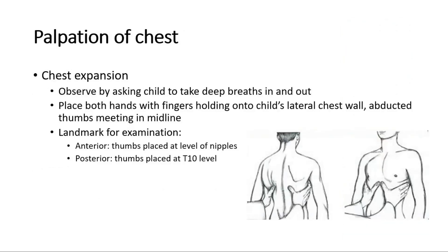Next, palpation of the chest — start with the anterior chest, then move to the back. For palpation, we can assess chest expansion, which is usually performed in children more than 5 years old. Observe the general chest expansion by asking the child to take deep breaths in and out. The examiner places both hands with fingers holding onto the child's lateral chest wall, with the abducted thumbs meeting in the midline. The thumbs should be slightly lifted off the chest to allow free movement. For anterior, the thumbs are placed at the level of the nipples; for posterior, at the T10 level.